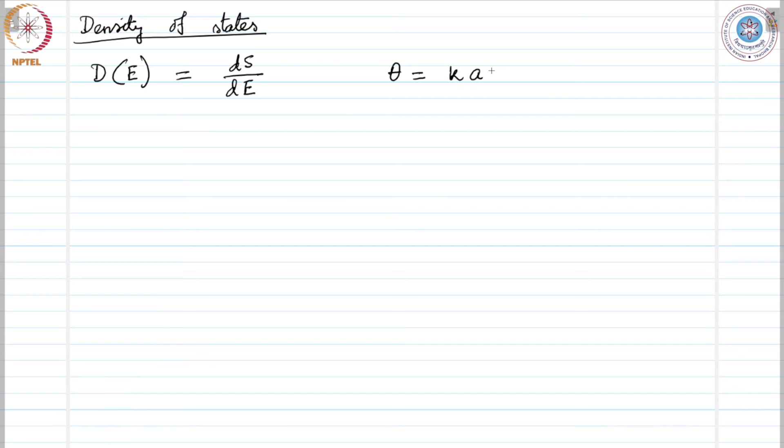In the reciprocal lattice, reciprocal space, this ka is the form of θ for one dimensional Brillouin zone. For more than one dimensional, it would be a vector.